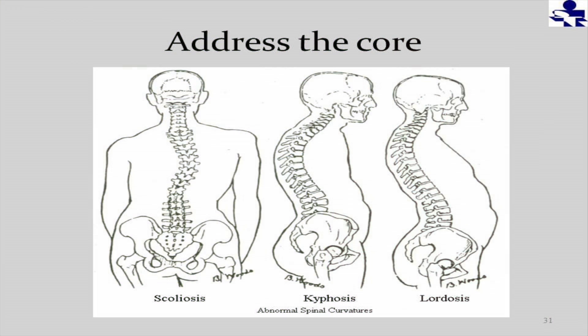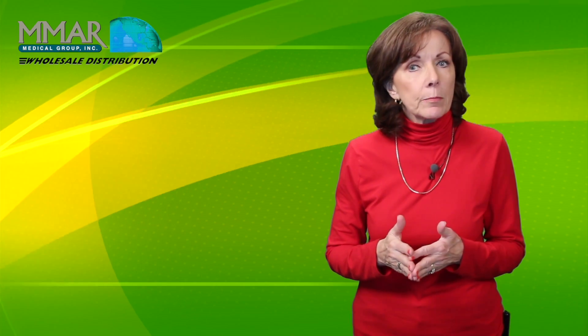This is a slide that shows very common curvatures that you will find in neurological patients. It might be from neurological tone that has pulled them offline, but it can also be just weakened muscles that have allowed their body to compress. These patients typically lose inches off their height and we may see this as normal. Well, it does occur normally, but it is something we should be alarmed about because something is going on that needs to be addressed.